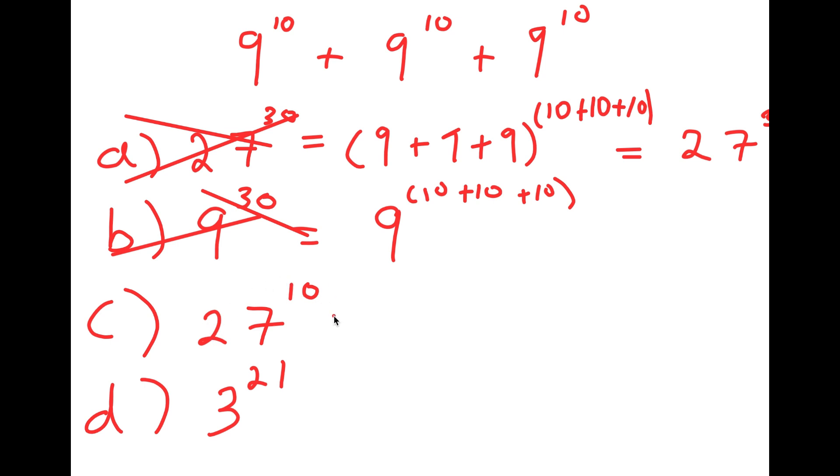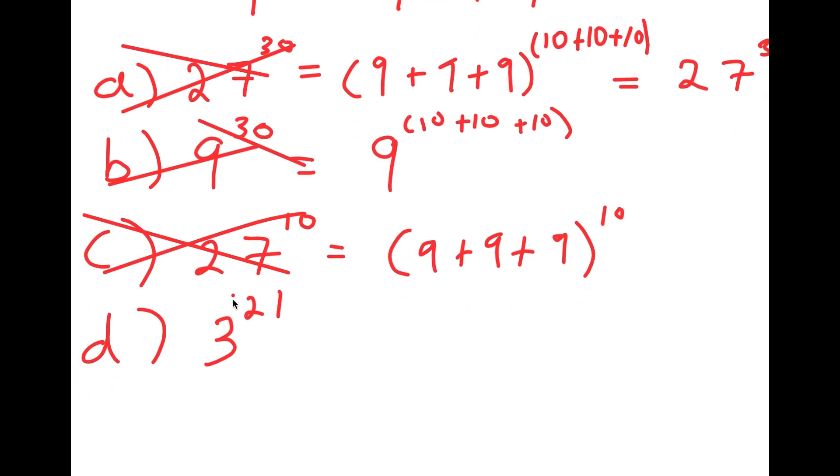Now we have 27 to the power of 10. And this was gone from adding the bases, but keeping the exponent the same. And this again is wrong as well. That's not how you add exponents.